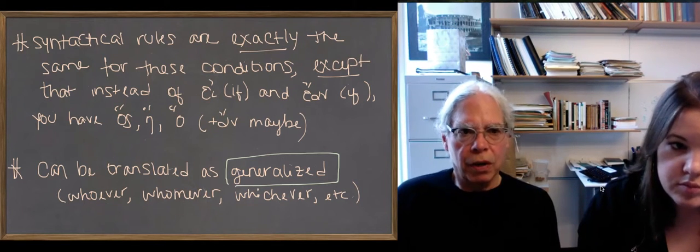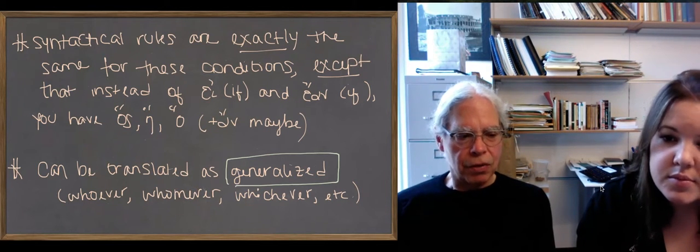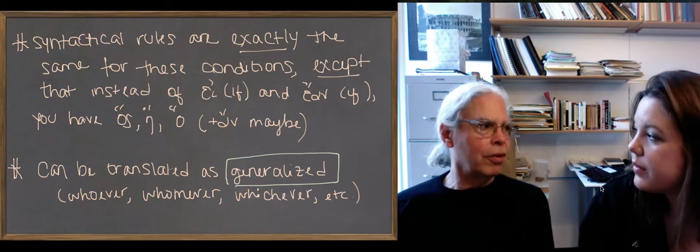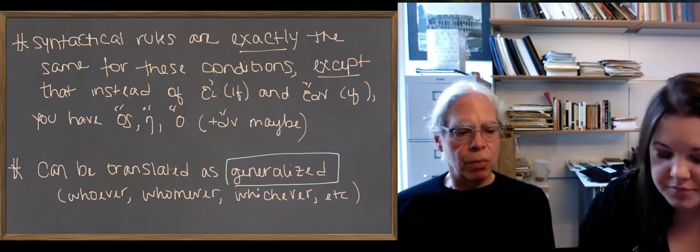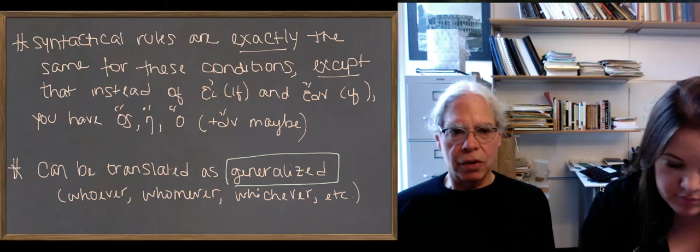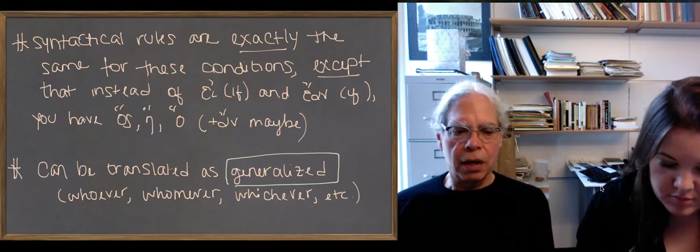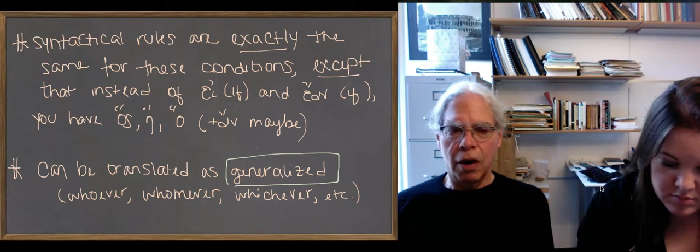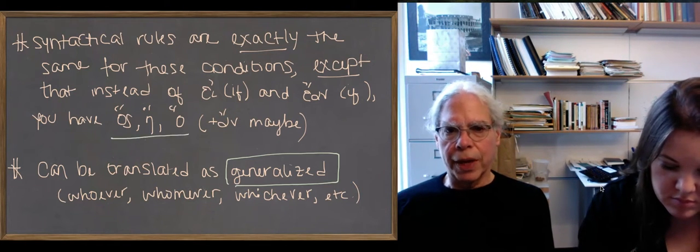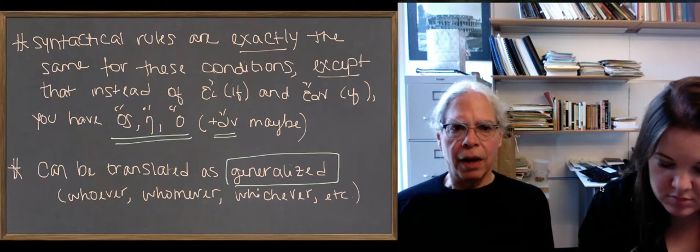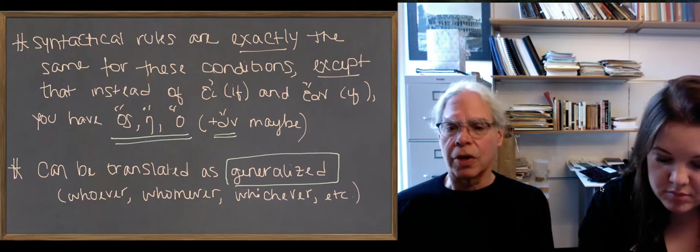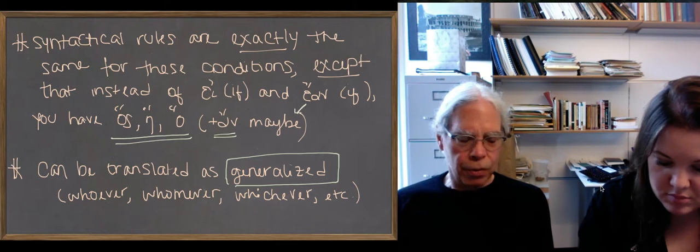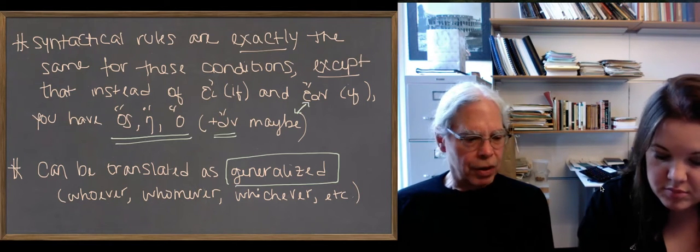So the first point on this screen is the key thing that we're not learning any new syntax. It's only about the way in which the if clause is introduced. That is, there's no a or a on. Instead, you have a form of the relative pronoun, hos, he, ha, with or without on, where you have a on, you have the on added on as a separate word next to the hos. So the syntax rules are exactly the same.